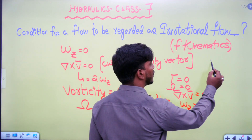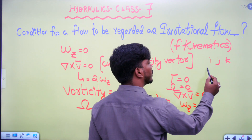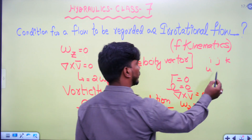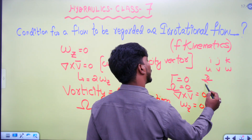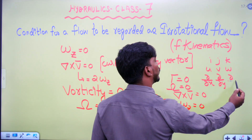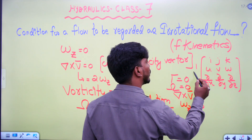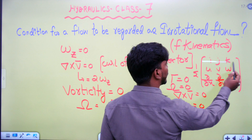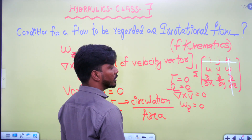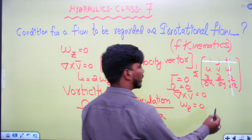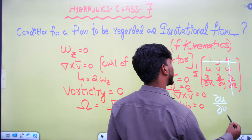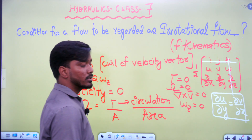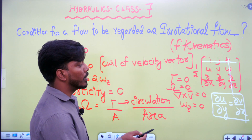The angular velocity formula uses the determinant with i, j, k components and u, v, w velocity components with partial derivatives with respect to x, y, z. Expanding the determinant, the condition for irrotational flow gives us: ∂u/∂y equals ∂v/∂x, since angular velocity equals zero and the determinant becomes zero.